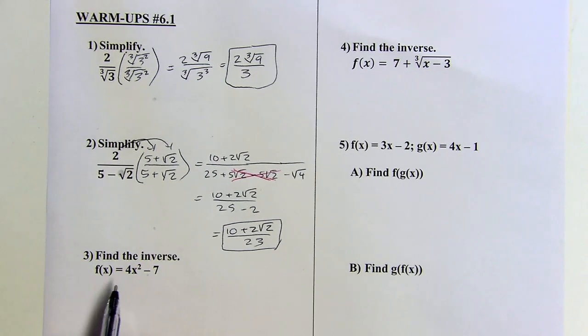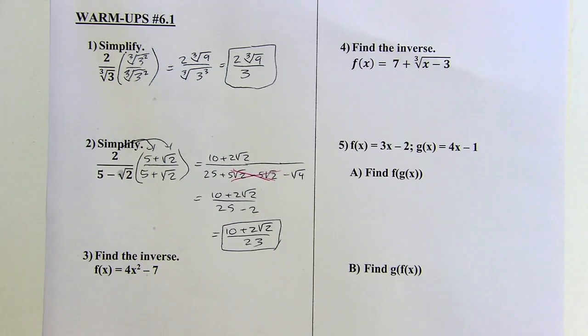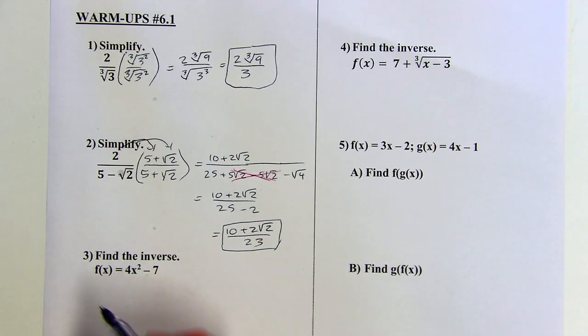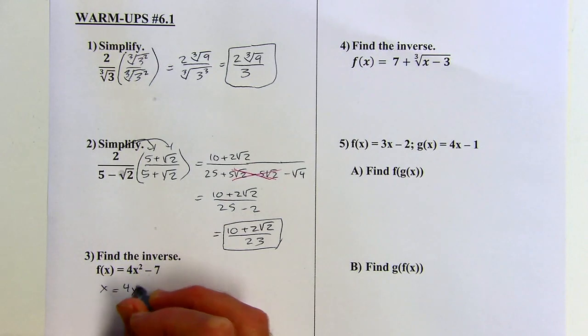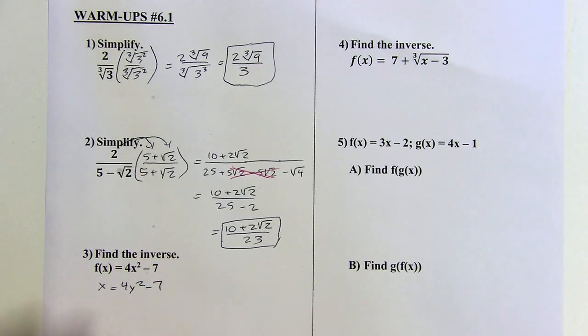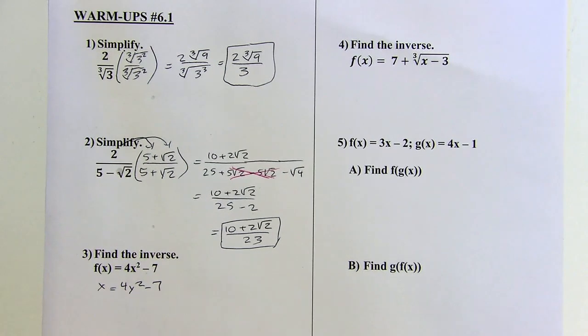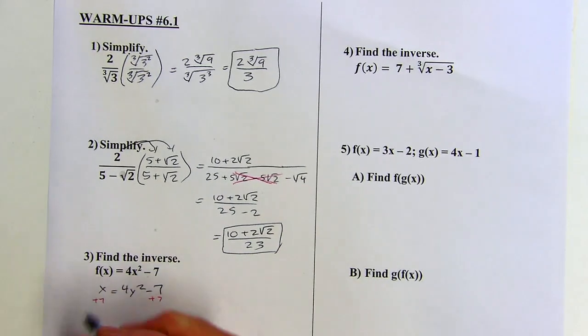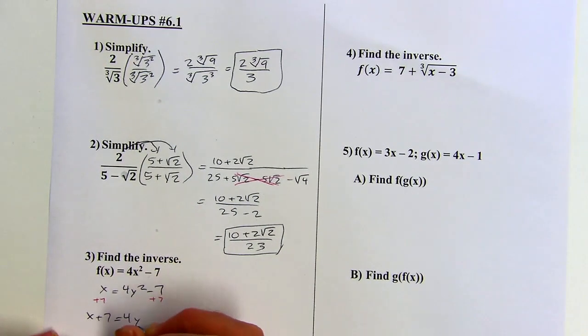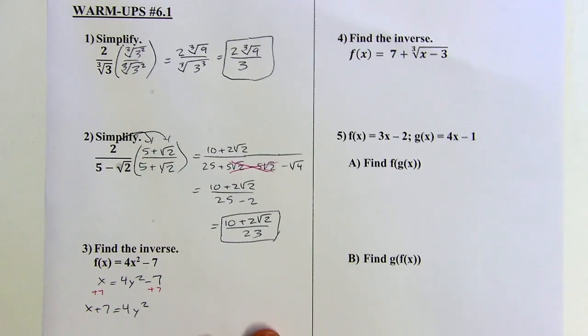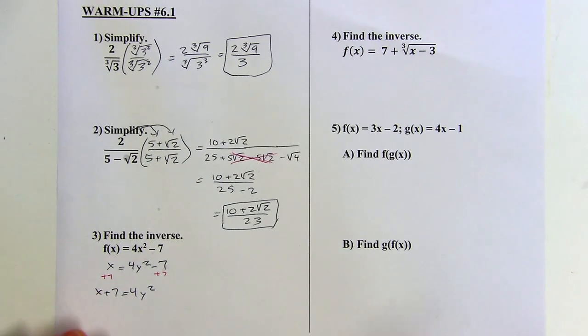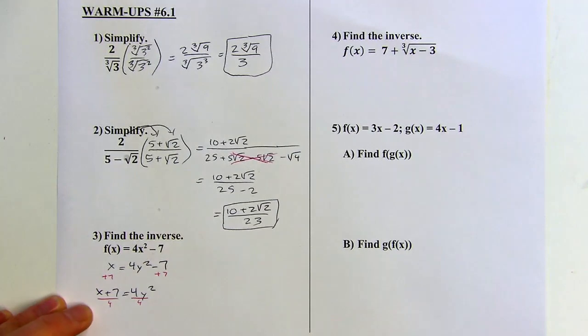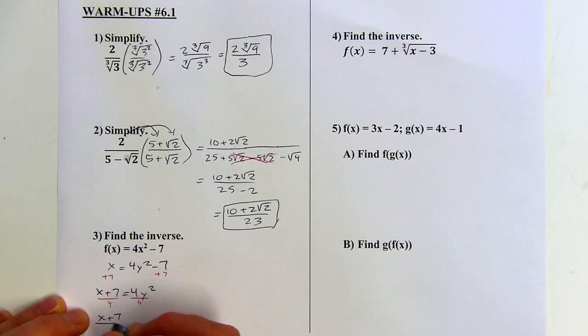Let's find some inverses. When you're finding the inverse of an equation, what you want to do is switch the x and the y. And yeah, this isn't a y, but I'll think of this as my y. So if I switch those, it would look like this. And then I want to isolate the y. So, okay, I want to get the y by itself. Let's start by adding 7 to both sides. So now I've got x plus 7 equals 4y squared. Now I can divide by 4. And I've got x plus 7 all over 4 equals y squared.